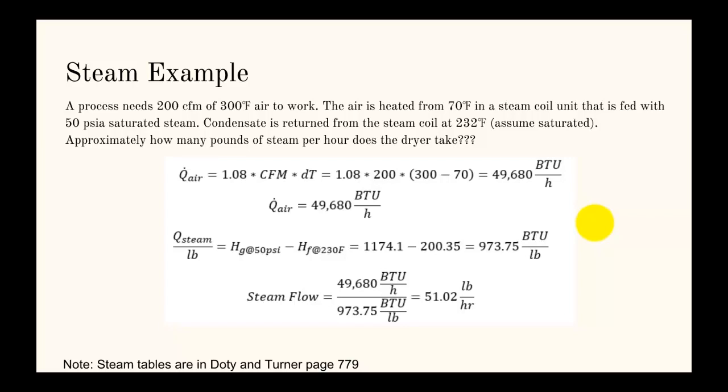The idea here is we're supplying heat to the air with the steam. The first thing we need to do is figure out how much heat we need to supply to the air. We do that by taking the formula 1.08 times CFM times delta T. Remember, this formula is very specific for air when you have a CFM air flow and a temperature change. We plug in the CFM and the temperature change, and we get 49,680 BTUs per hour. That's how much heat we have to supply.